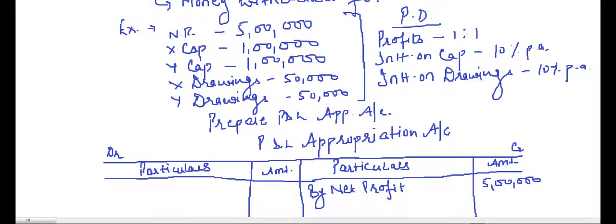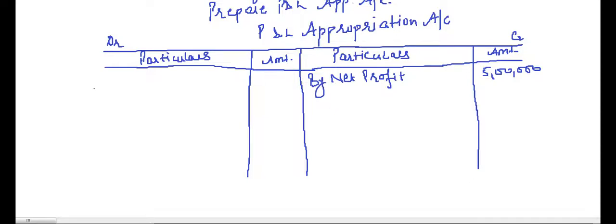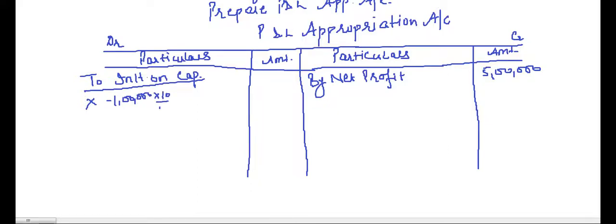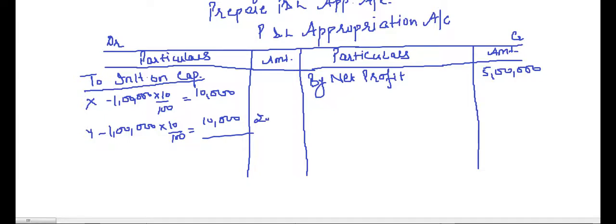Second, for interest on capital: X has capital of 1 lakh and Y has capital of 1 lakh, and the partnership deed provides interest at 10% per annum. This is an expense for the business, so we write it on the debit side: 'To Interest on Capital.' X: 1 lakh × 10/100 = 10,000. Similarly, Y: 1 lakh × 10/100 = 10,000. Total interest on capital = 20,000.